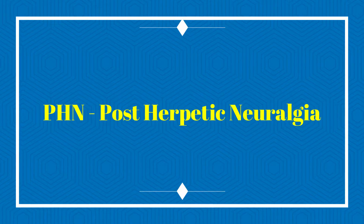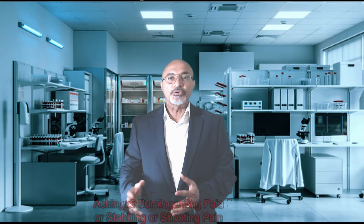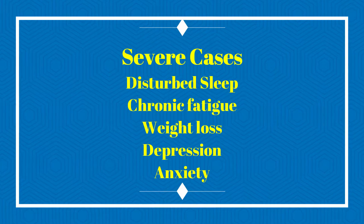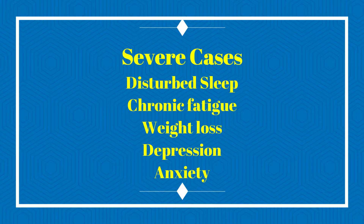Post-herpetic neuralgia, in which pain persists for more than 30 days after the lesions have healed, is the most common complication of shingles or herpes zoster. At least 50 percent of people over the age of 50 who develop herpes zoster complain of pain in the area supplied by the affected nerve for months after the lesions have healed. The pain may be constant, aching and burning, or it may be intermittent, stabbing and shooting, and at times it may be severe and affect patients' ability to perform their activities of daily living. Severe cases may cause disturbed sleep, chronic fatigue, weight loss, depression, and anxiety.